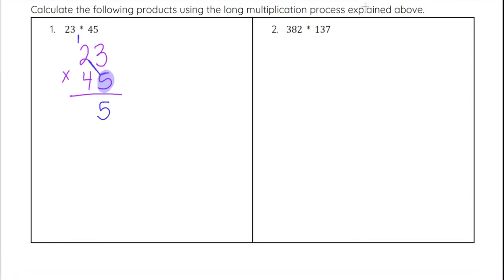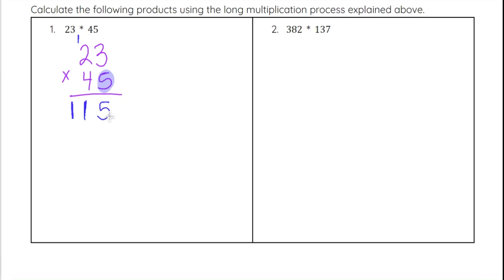Now we do 5 times 2. 5 times 2 is 10, and then we add the carried 1, giving us 11. We have our 11 — the second digit is 1. Normally you would carry the 1 to the next column, but there is no more column, so we just put 11 next to the 5 already there. That completes the first round of multiplication.